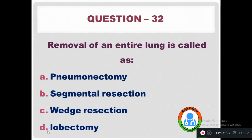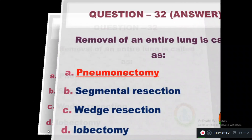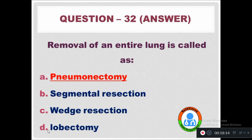Question 32: Removal of an entire lung is called — Option A: Pneumonectomy. Option B: Segmental resection. Option C: Wedge resection. Option D: Lobectomy. Removal of an entire lung is called pneumonectomy.